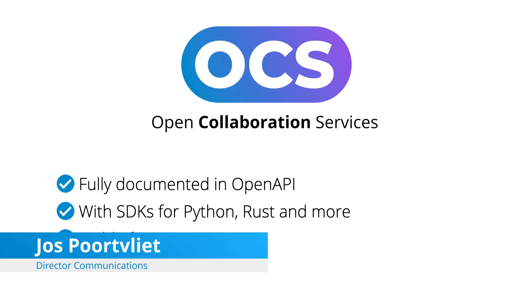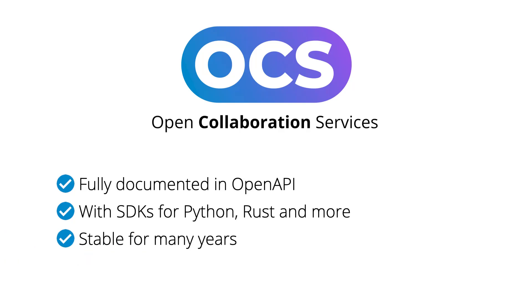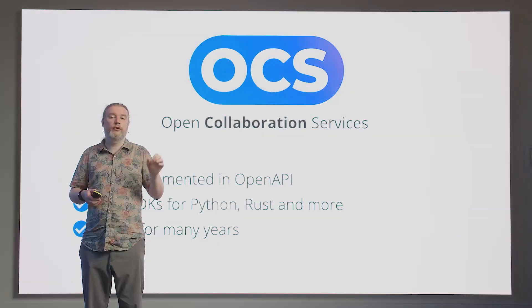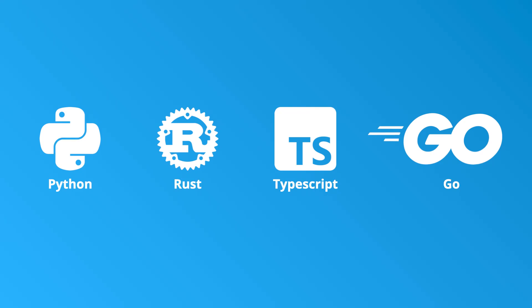The Open Collaboration Services API is a powerful application programming interface that makes it possible for an external application to talk to the Nextcloud server. To make this as easy as possible for developers, we offer a number of software development kits. Many other languages beyond those shown here are supported.